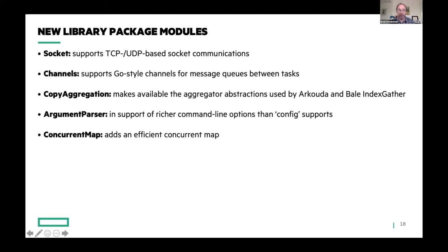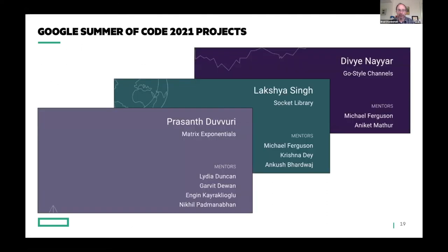In terms of libraries, we've got a number of new library package modules: a sockets module for sockets programming, a channels module for task-to-task channels, a copy aggregation module which has driven a lot of good performance particularly for CUDA in recent years, an arg parse module, and a concurrent map module. I want to call out that the first two modules were developed as Google Summer of Code projects in 2021 — thanks to those contributors and mentors. A third GSoC project improved our linear algebra module by adding matrix exponentials.